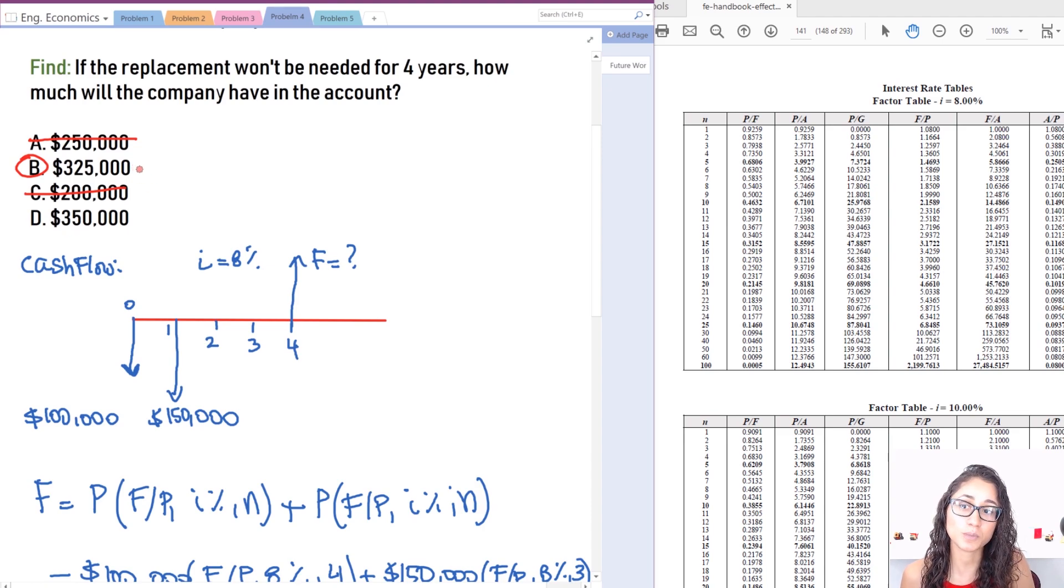Now, $200,000 it cannot be lower than how much you deposited, right? And then $350,000, so it could be either $350,000 or $325,000. And that one comes down to either you know the question and you're going to try to solve it, or you're just going to guess and then you have 50-50 percent of getting the right answer.